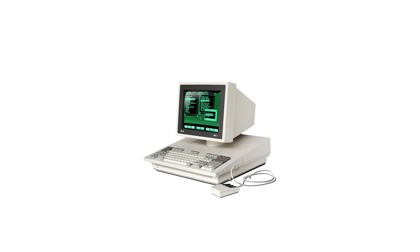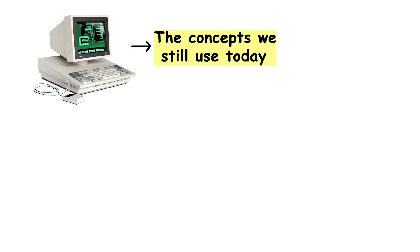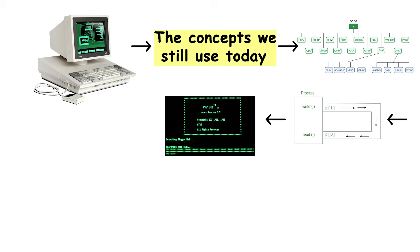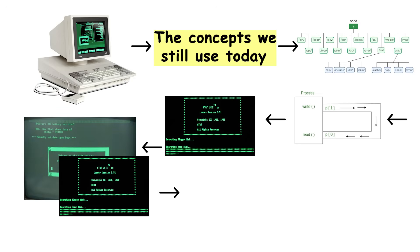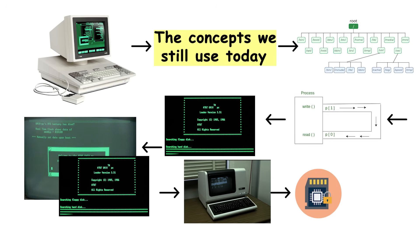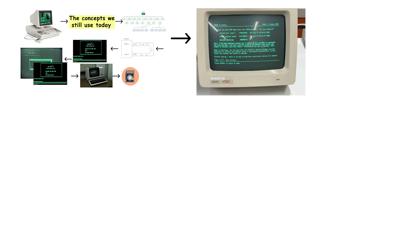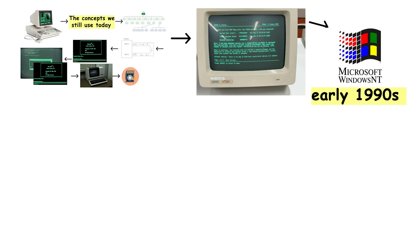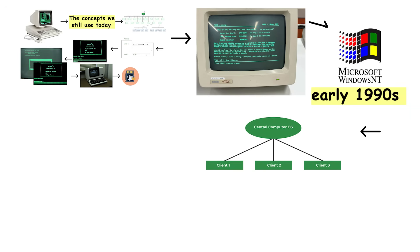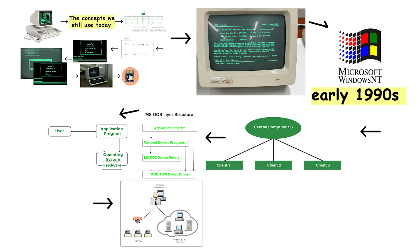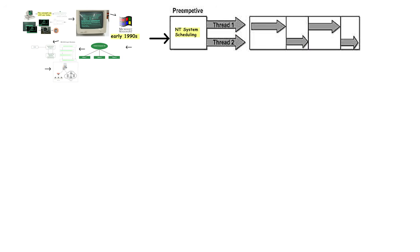Unix became the gold standard, introducing concepts we still use today: hierarchical file systems, pipes for connecting programs, user permissions, and process isolation. A user's program ran in protected memory space separate from other users and from the kernel itself — if your program crashed, it didn't take down the whole system. Windows NT emerged in the early 1990s as Microsoft's answer to enterprise multi-user systems. Unlike DOS, which was single-user and single-tasking, NT could handle multiple users, preemptive multitasking, and proper security.